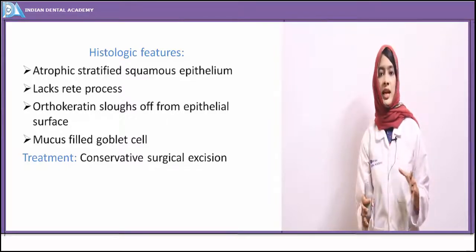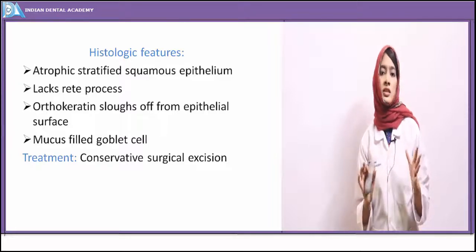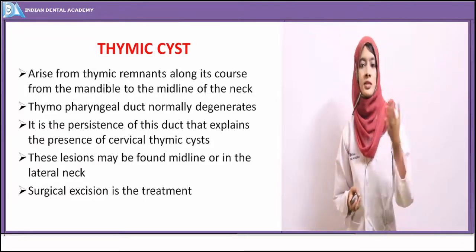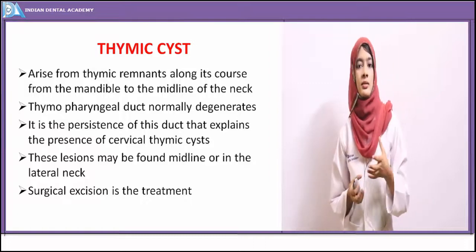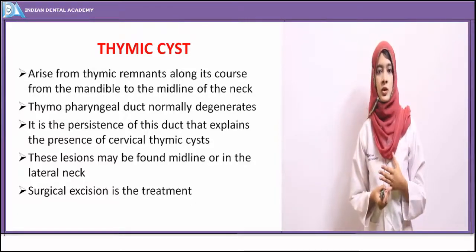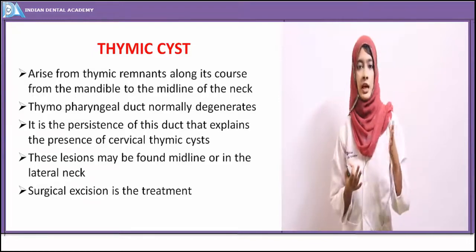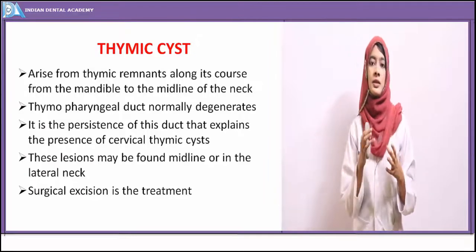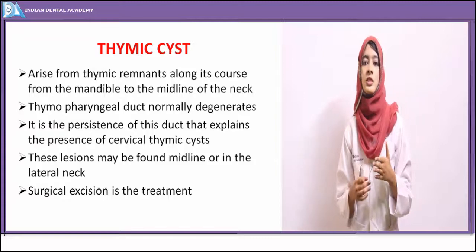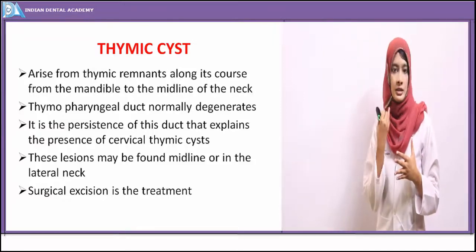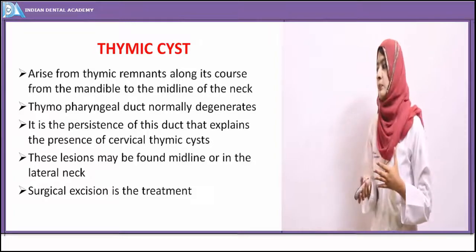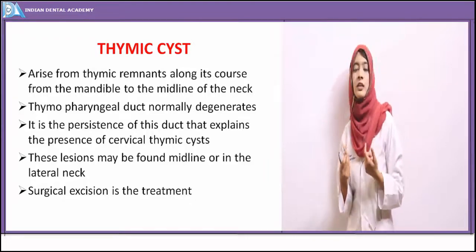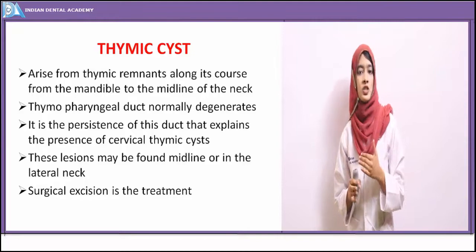The lymphoepithelial cyst is a relatively rare lesion. The thymic cyst is another soft tissue cyst — after the thymus gland descends from its place of origin, the thymopharyngeal duct should degenerate. Persistence of this duct leads to tract formation, epithelial cells become entrapped, and cystic formation results — that is the thymic cyst. It is seen in the lateral neck region, presenting as swellings on the lateral area of the neck. Treatment is surgical excision of the tract.